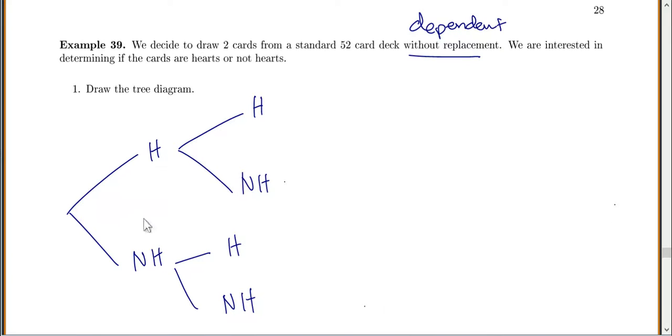The first time you draw a card, if you want to get a heart, you'd have 13 out of 52 cards are hearts. If you wanted to not get a heart, there are 39 out of 52 cards that are not hearts. But that changes for your second card. We did it without replacement. We don't put those cards back, so these probabilities change.